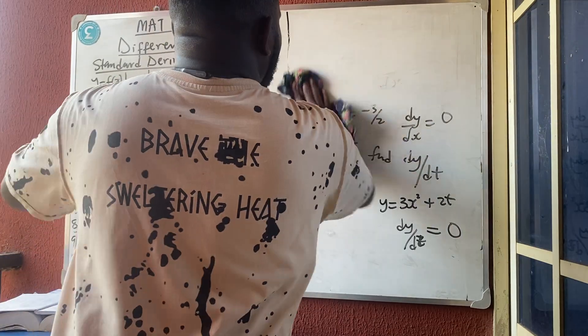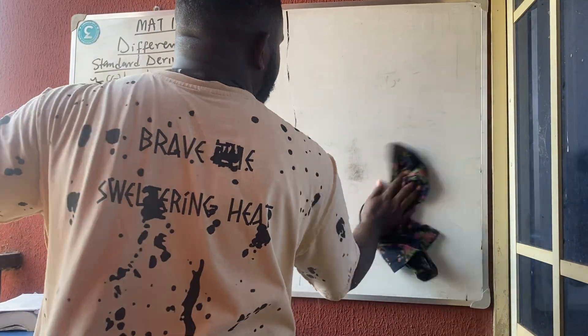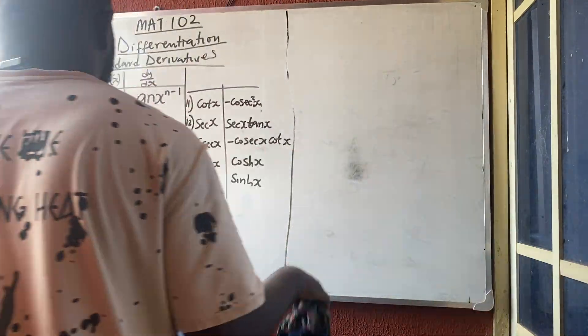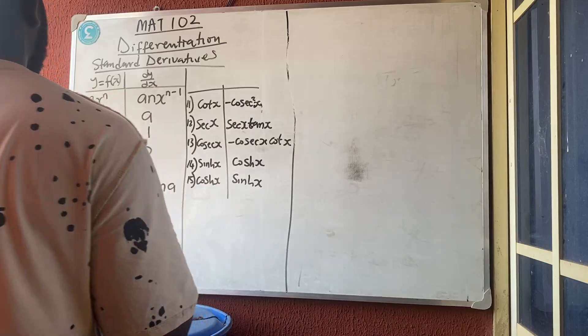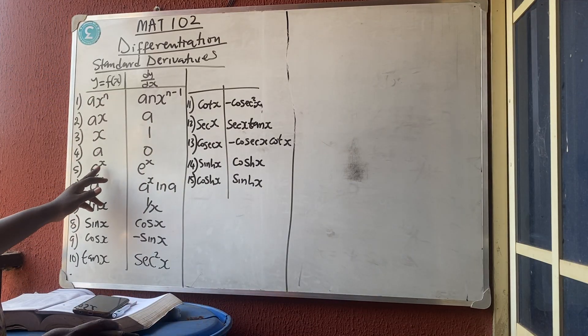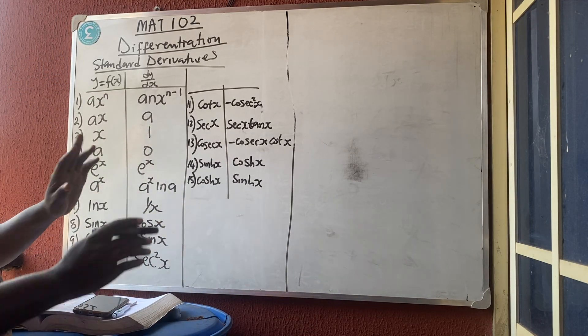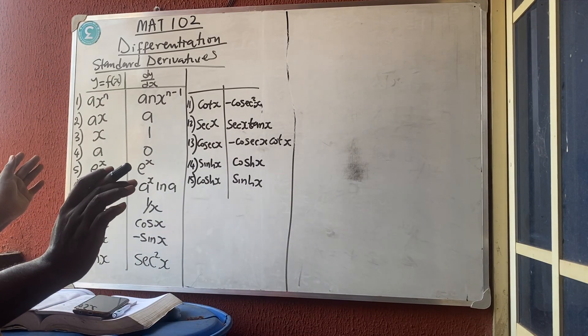So the differentiation of any constant is zero — and 'constant' does not necessarily mean it must be a number. Rule 5: the derivative of e^x is e^x; it does not change.